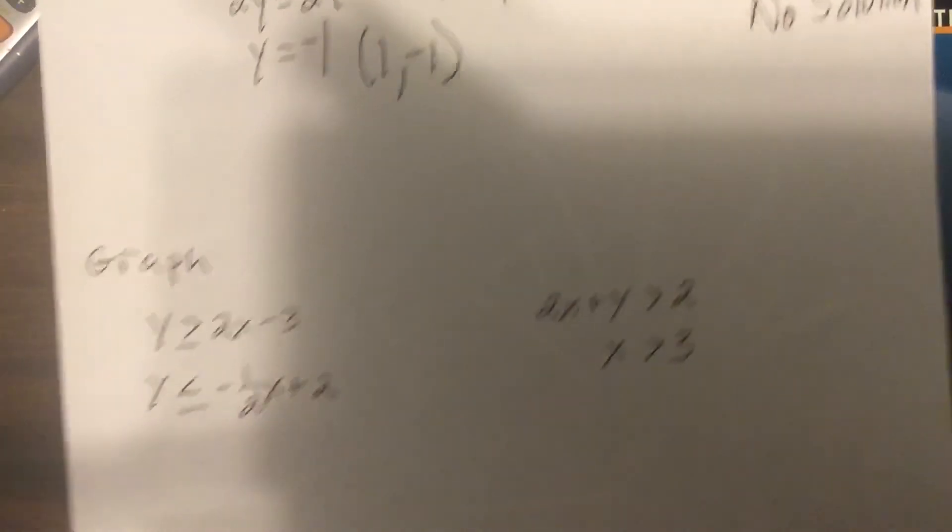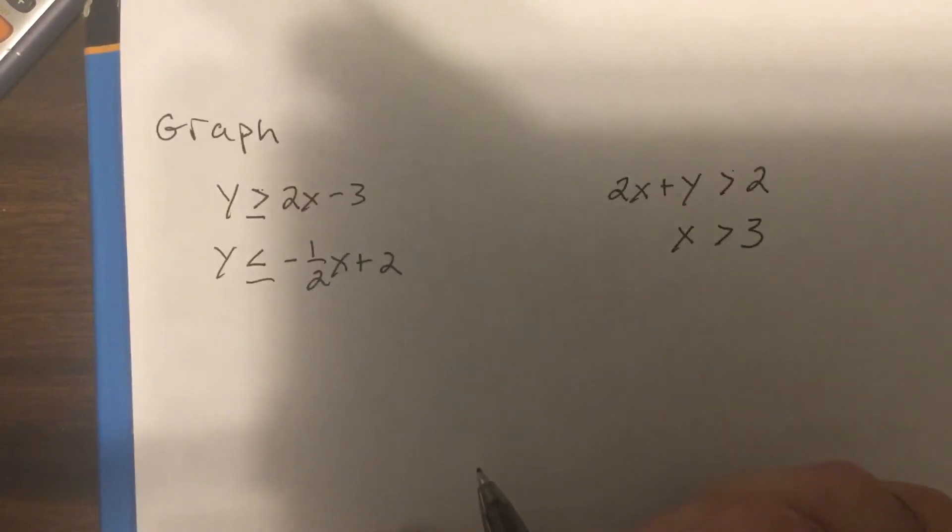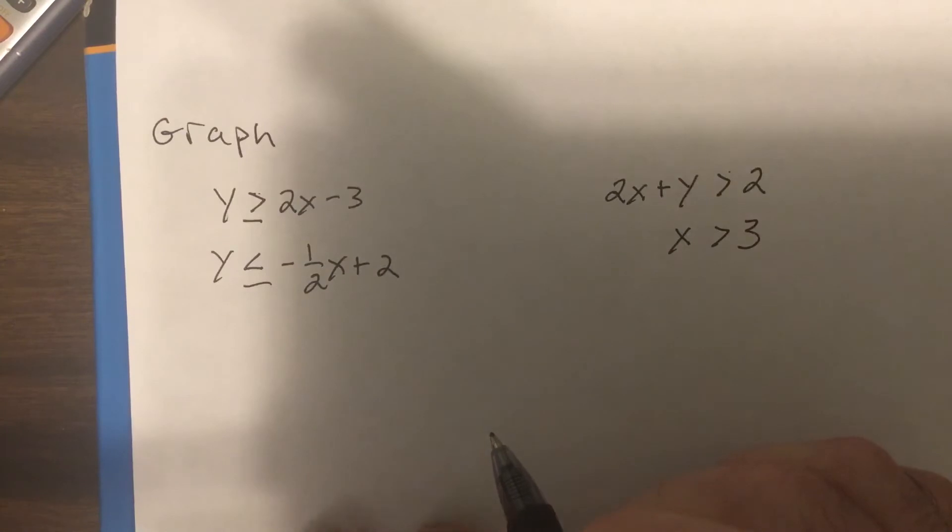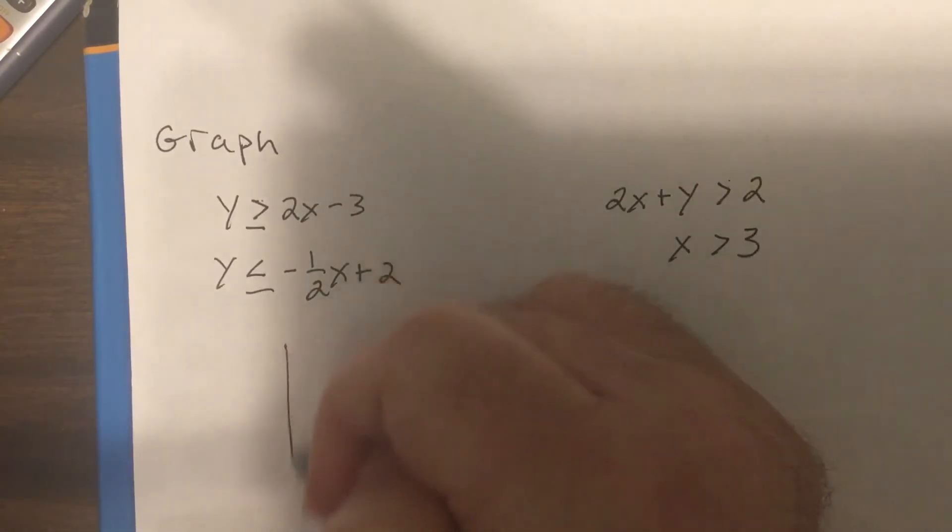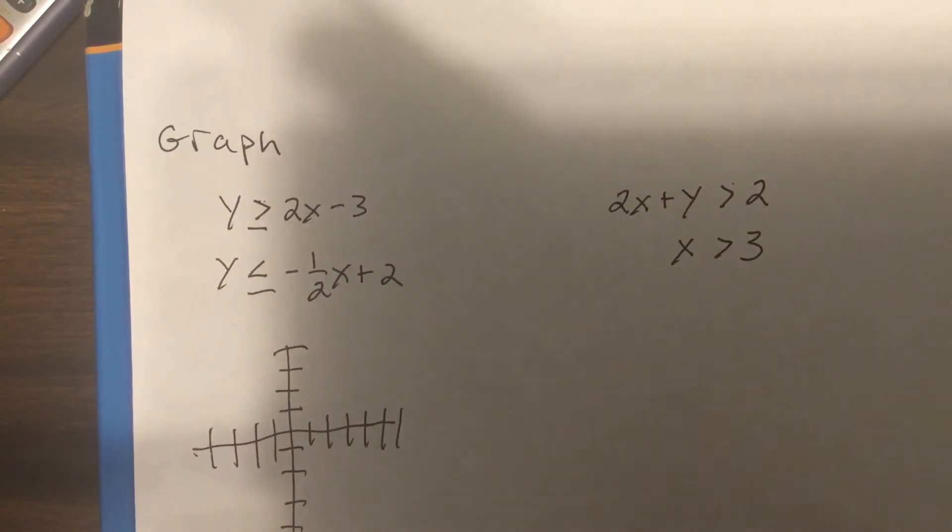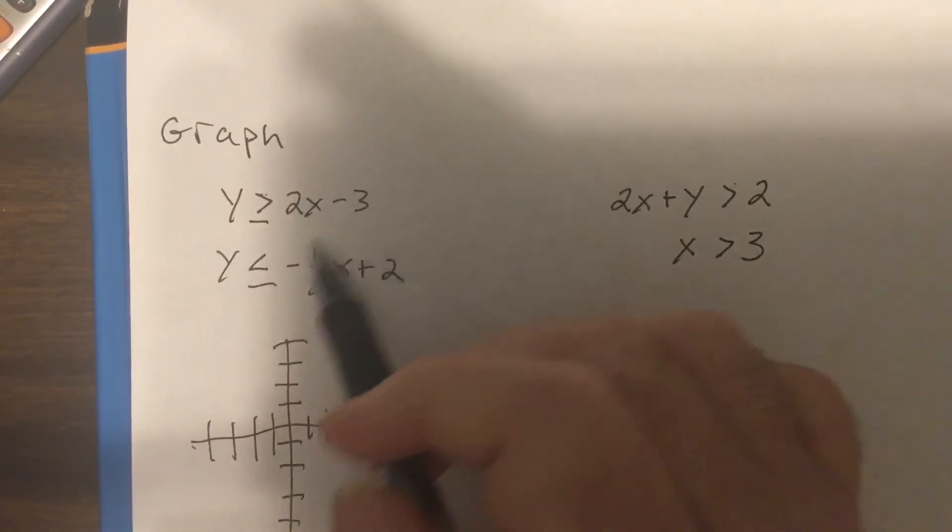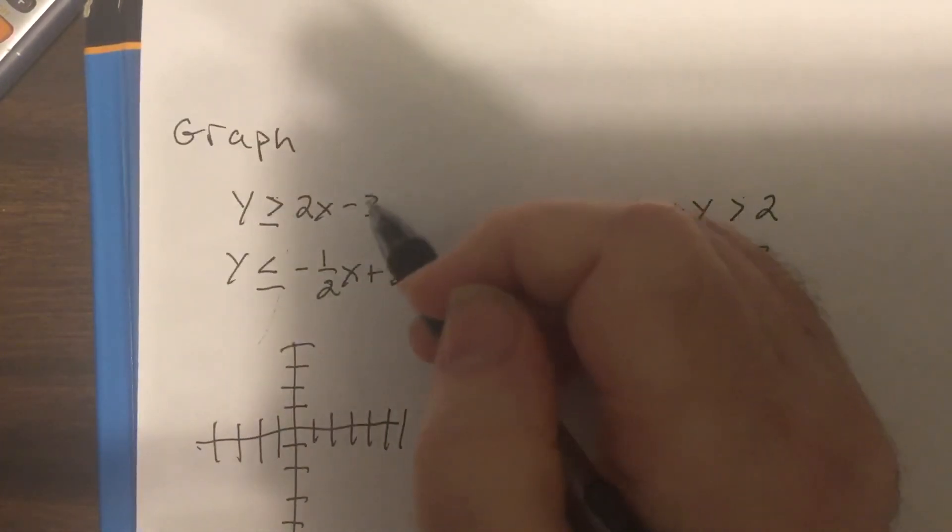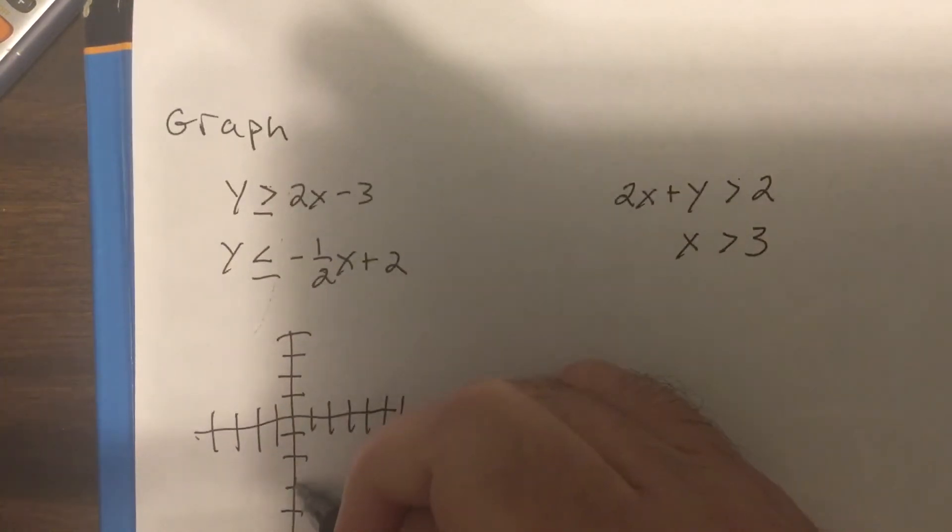Okay, two more problems. Graph these two. So now I gave you two systems on the quiz on Wednesday, our last quiz of the quarter. I'm assuming I'll probably give you one, maybe two, just single linear, and then maybe two with the system. So this is minus 3, up 2 over 1, up 2 over 1, solid.